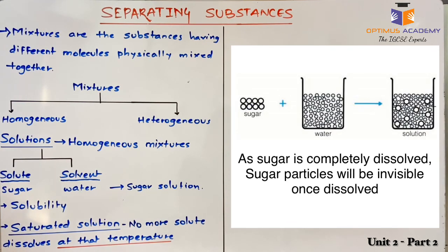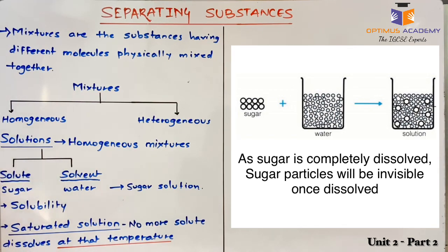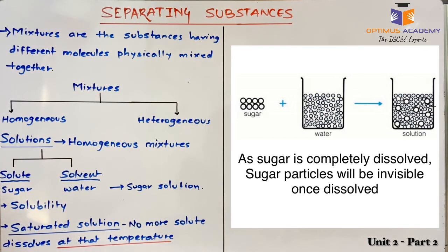We will be further discussing about homogeneous mixtures, which are also known as solutions. Solutions are a type of homogeneous mixture wherein the substances mixed together cannot be easily identified or seen with the naked eye. Solutions are made up of solute and solvent particles. A solution of sugar with water is a type of homogeneous mixture, and the same thing can be seen with salt solution as well.